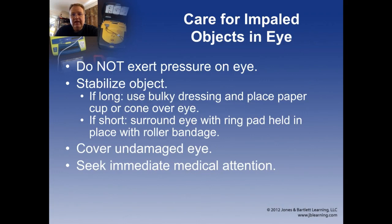If someone has an impaled object in their eye, the most important thing is to not exert any pressure that would cause fluid to leak from the eye — that causes the most damage. Don't exert pressure on the eye. Stabilize the object: for a long object like a pencil, use a bulky dressing and either a paper cone or a cup with a hole cut in the bottom to stabilize it. For a short object, use a small ring pad and roller bandage. Because the eyes track together, you must cover the uninjured eye to prevent the injured eye from moving. This is very scary for the patient since now they can't see, so reassure them, hold their hand, and get them to medical attention immediately.